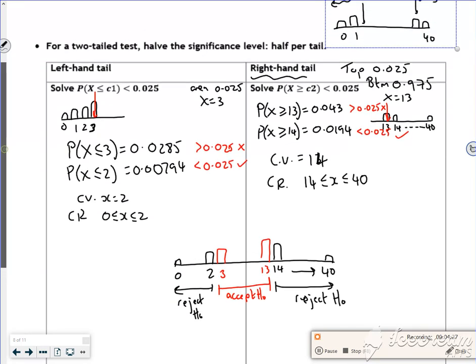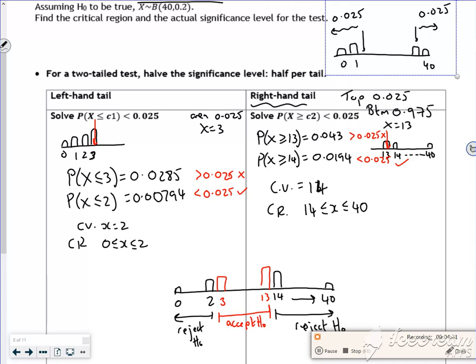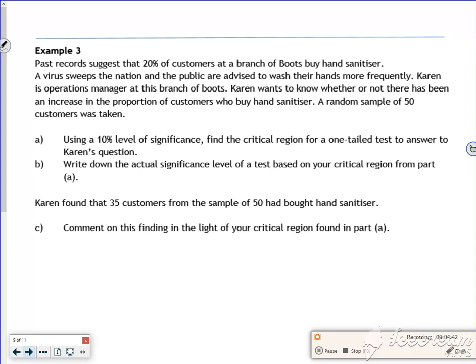So left-hand tail is straightforward. But for the right-hand tail, because the calculator runs the wrong way, instead of looking at the top 0.025, look at the bottom 0.975. I think that's it. I'm going to stop this now and do a hypothesis test next.